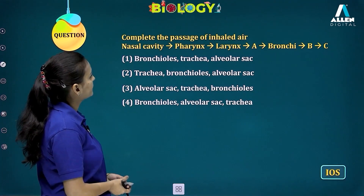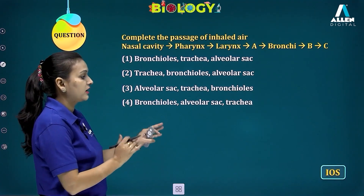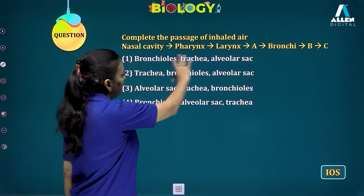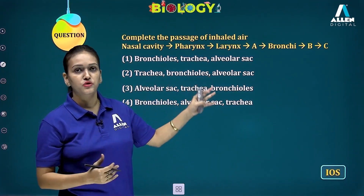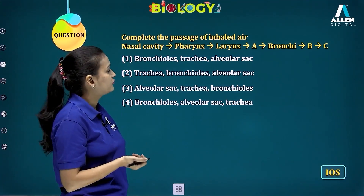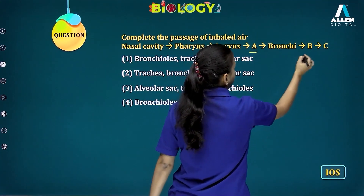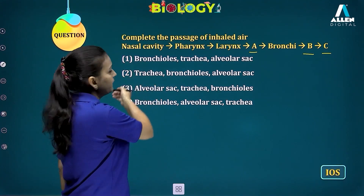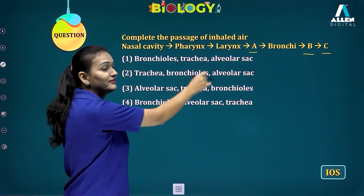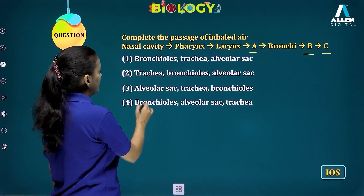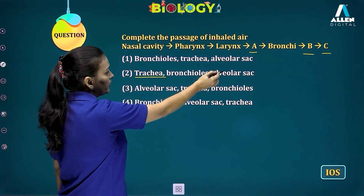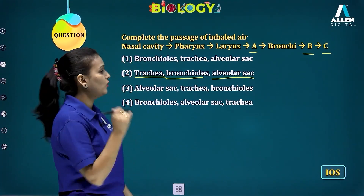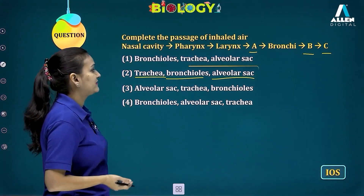Next, an IOS Olympiad-based question: complete the passage of inhaled air. Air passes through the nasal cavity, then option A should be the trachea, from trachea to the bronchi, from bronchi into the bronchioles, and from bronchioles into the alveolar sac. So option B — option two — is the correct answer.